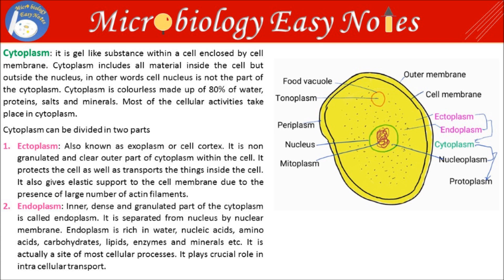Next is Endoplasm. The inner, dense and granulated part of the cytoplasm is called endoplasm. It is separated from the nucleus by the nuclear membrane. Endoplasm is rich in water, nucleic acids, amino acids, carbohydrates, lipids, enzymes and minerals. It is actually a site of most cellular processes and plays a crucial role in intracellular transport.